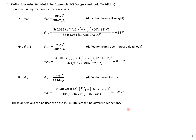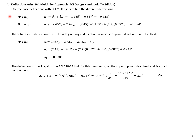We can use all of these deflections with the PCI multipliers to find deflections throughout the life of our beam. For initial camber, we add our pre-stress deflection to our self-weight deflection with no multiplier, giving an initial camber of negative 0.628 inches — an upward deflection. For final camber, we multiply the pre-stressing deflection by 2.45 and the self-weight deflection by 2.7, which are the PCI multipliers at final time, giving a final camber of negative 1.324 inches.